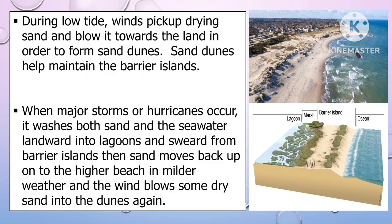During low tide, winds pick up drying sand and blow it towards the land in order to form sand dunes. Sand dunes help maintain the barrier islands. When major storms or hurricanes occur, it washes both sand and seawater landward into lagoons from barrier islands. Then sand moves back up on the higher beach in milder weather, and the wind blows some dry sand into the dunes again.